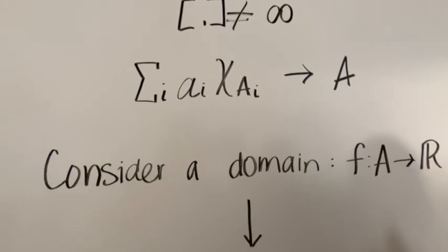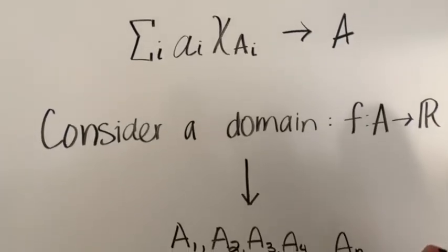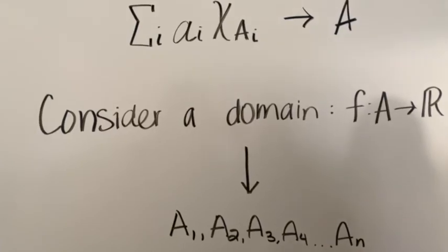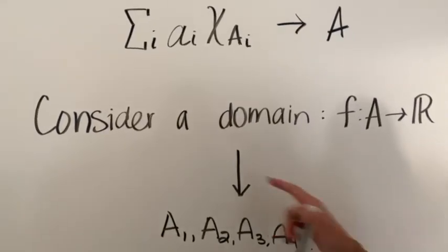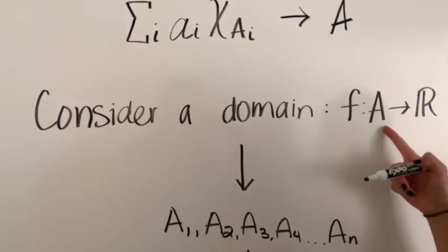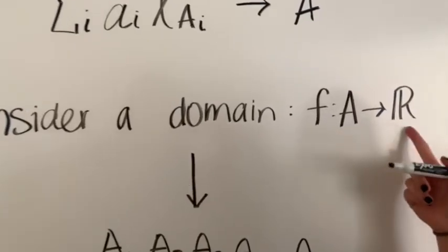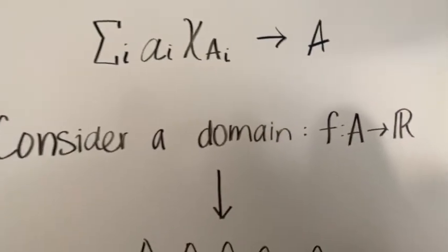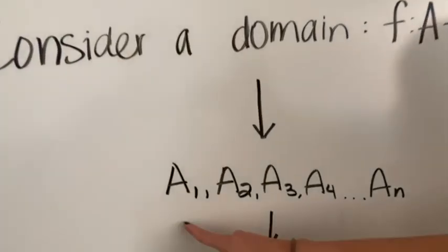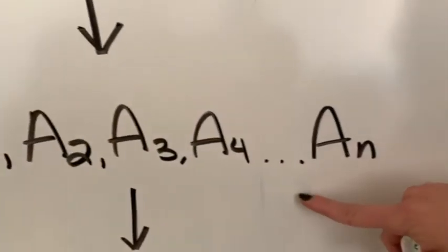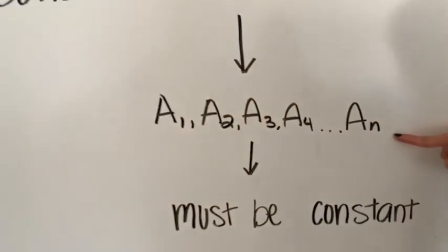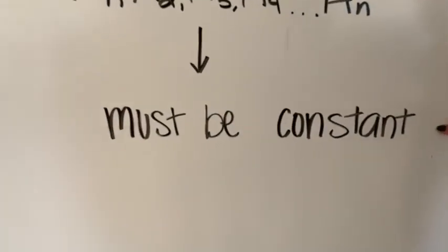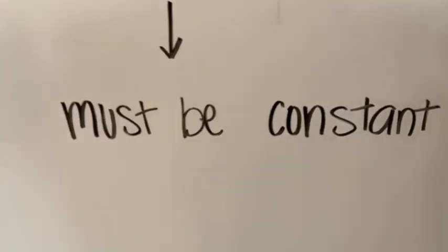Furthermore, it is easy to integrate by approximating a function f by simple functions. The Lebesgue integral of f can be calculated. Consider a domain where f maps into all real numbers. Suppose we have a finite amount of subsets: a1, a2, a3, a4, and so on. For f to be simple, f must be constant in each subset.